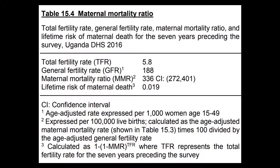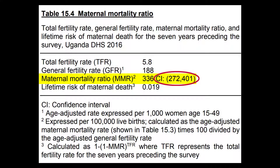In DHS Final Reports, you can typically find the maternal mortality ratio in the table titled Maternal Mortality Ratio. This table is from the 2016 Uganda DHS. The subtitle of the table specifies the reference period — the seven years before the survey. The MMR can be found in the row labeled Maternal Mortality Ratio. The 2016 Uganda DHS estimates an MMR of 336 deaths per 100,000 live births. The table also presents the confidence interval — a range of values consistent with sampling variation. The 95% confidence interval, abbreviated CI, for the 2016 Uganda DHS MMR estimate ranges from 272 to 401 deaths per 100,000 live births.